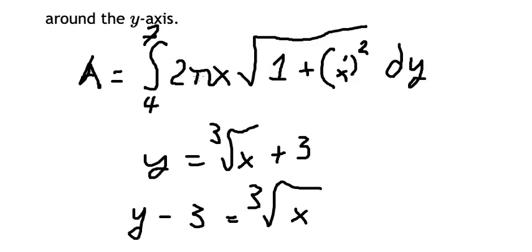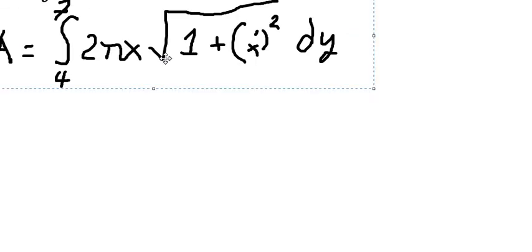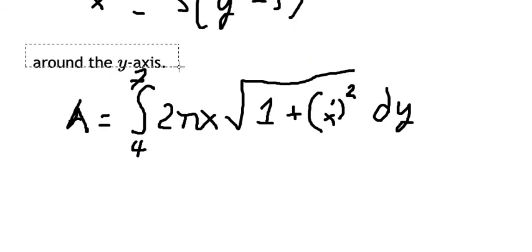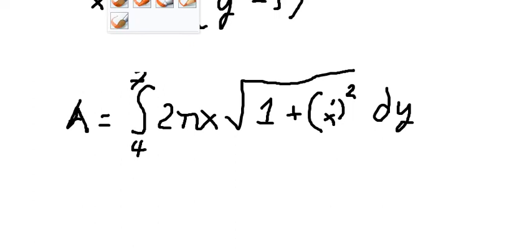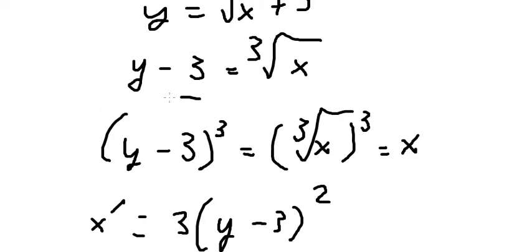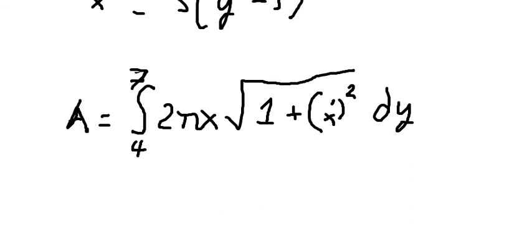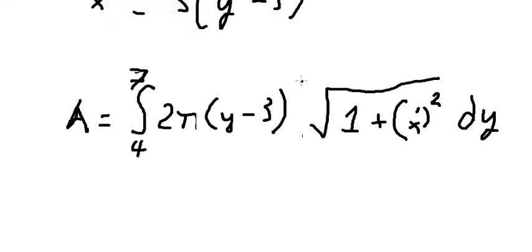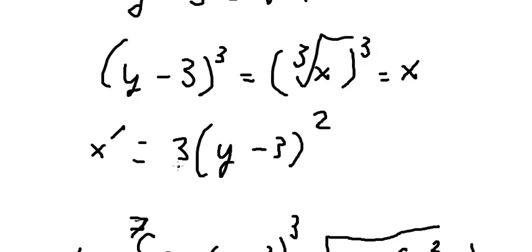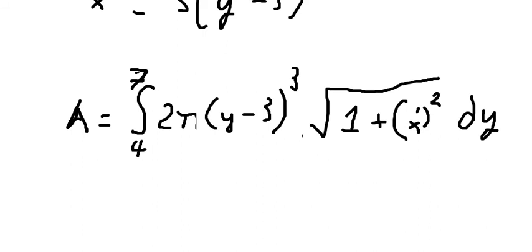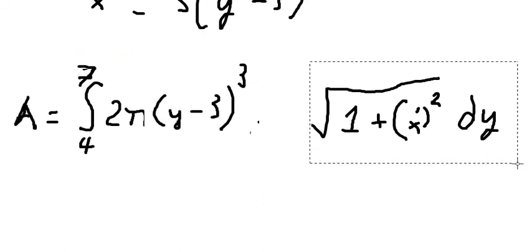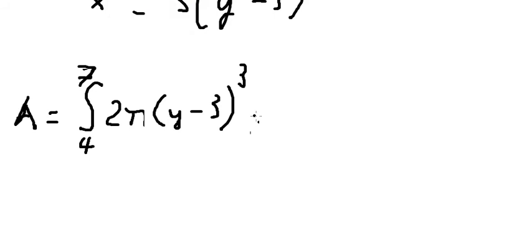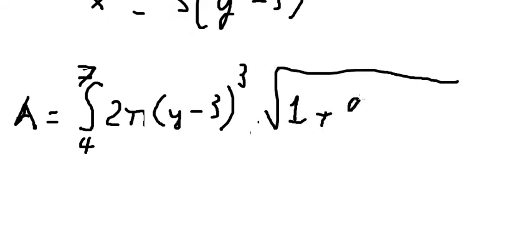Now we substitute this into the formula. So s equals this expression, and (y minus 3) cubed goes here. For the first derivative of s, we square it and we get 9(y minus 3) to the power of 4 here.